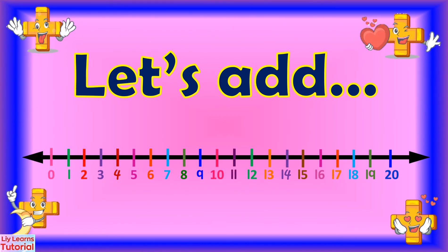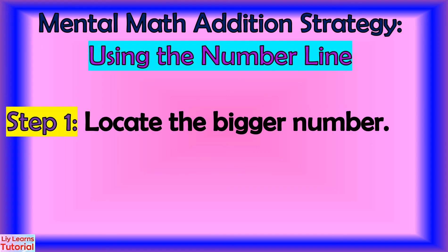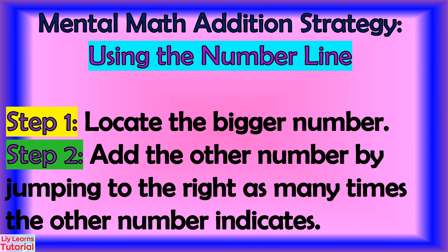Let's add using the number line. Here are the steps to follow in addition using the number line. Step 1: locate the bigger number. Step 2: add the other number by jumping to the right as many times as the other number indicates.